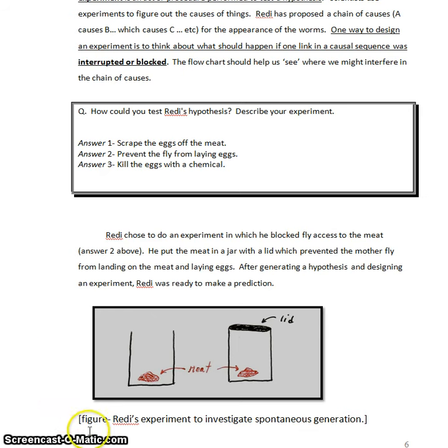In order to test the idea that it was fly access to the meat that was really causing the worms to appear, he set up two jars. One jar was open, so flies had access to the meat, and one jar had a lid on it, flies were excluded, they couldn't get in. And sure enough, when he did this experiment, the meat that was exposed had worms on it.